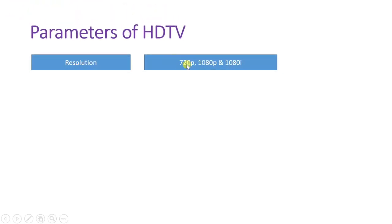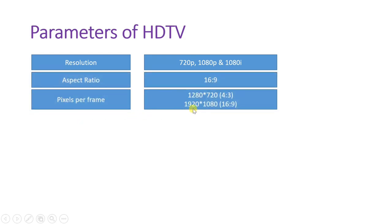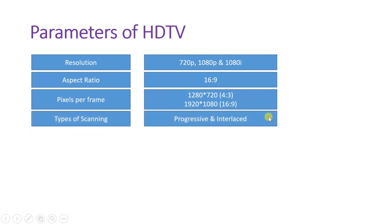The basic parameters of HDTV: Resolution options include 720p progressive, 1080p progressive, and 1080i interlaced. However, 1080i was later rejected, and the two adopted resolutions are 720p and 1080p. The aspect ratio is 16:9. For the 4:3 standard, pixels per frame are 1280 × 720, while for the 16:9 standard, it is 1920 × 1080. Scanning type evolved from interlaced — as initially used by Japan — to progressive scanning only.